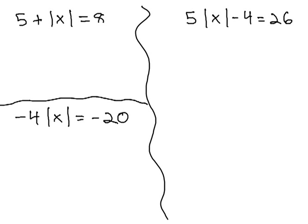For example, on this top left problem, 5 plus the absolute value of x equals 8. The absolute value is not alone yet, so we don't worry about it yet, and we just focus on getting that part of the equation completely alone by getting rid of the rest of the stuff. We get rid of five positives with five negatives on both sides. Now, the absolute value of x is equal to 3.